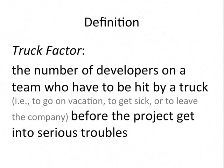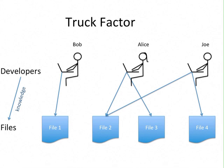Let's try to illustrate this concept. We have a set of developers that own a given knowledge about files that compose a project. In this example we have Bob, Alice, and Joe. Bob knows about file 1, Alice knows about file 2 and file 3, and Joe knows about file 2 and file 4.